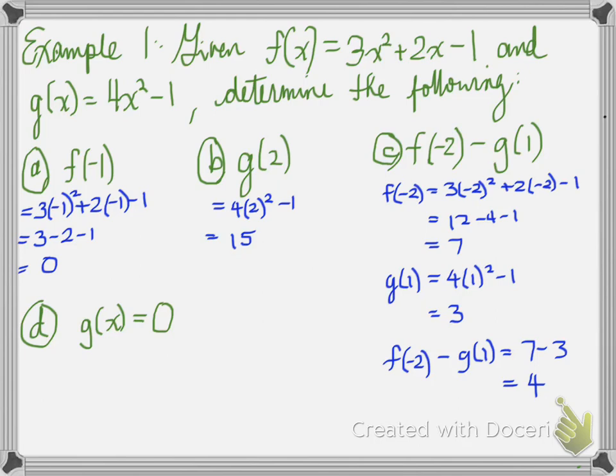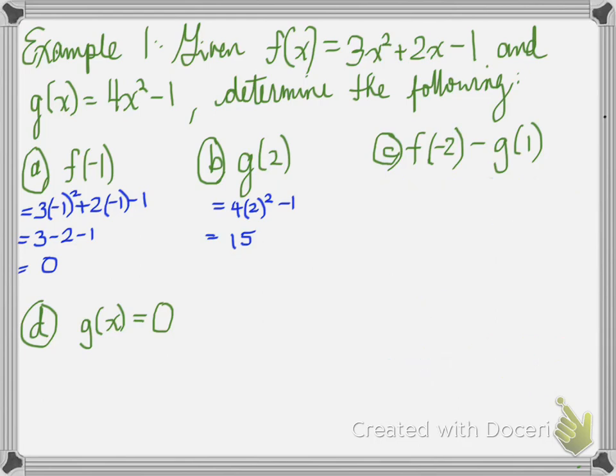That is one way to do this problem. Is it the only way? Of course not. Another way is to actually do this in one step. That is, 3 times negative 2 squared plus 2 times negative 2 minus 1. So that's f at negative 2 and then minus g at 1. g at 1 means you take the g equation and plug in the 1.